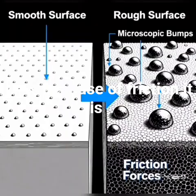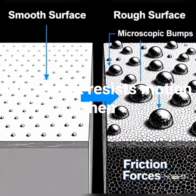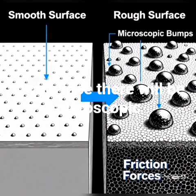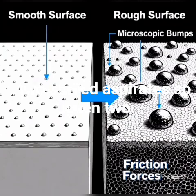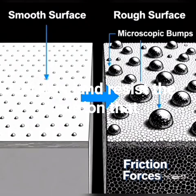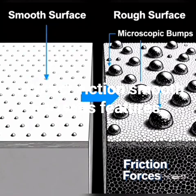That's because of friction. It is a force that resists motion when two surfaces come in contact. On any surface, there will be microscopic bumps called asperities. When two surfaces come in contact, these asperities interact and resist the motion. That is called friction.